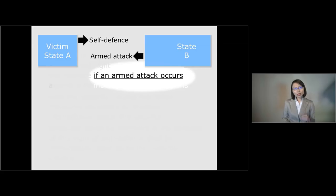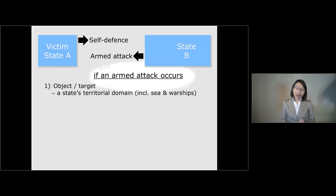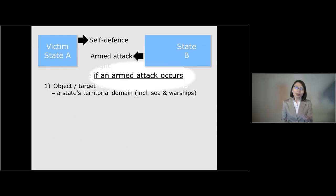First, what is supposed to be the target or object of an armed attack? In principle, the target or object of an armed attack is supposed to be a state's territorial domain. This includes not only the territory per se, but also the territorial sea and warships as well.